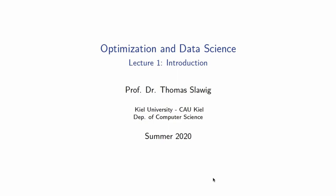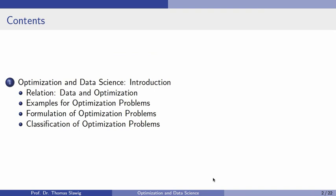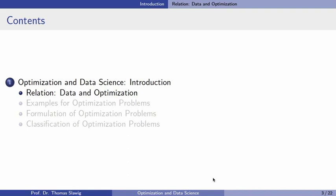Hello, my name is Thomas Slavik and this is the first lecture in the course Optimization and Data Science. The topic of the first lecture is an introduction. I want to speak about the relation between optimization and data science, then give examples for optimization problems, the general mathematical formulation of optimization problems, and the classification of different types of optimization problems.